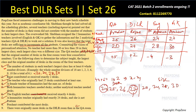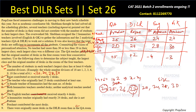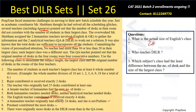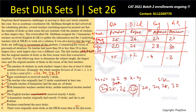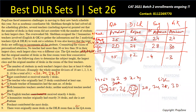Now answering the questions: What is the actual size of the English class? It is 28. Which subject's class had the least difference between number of desks and size of the largest class? The differences are: QA=5, DILR=2, English=4, GK=3. The least difference is 2, which belongs to DILR.